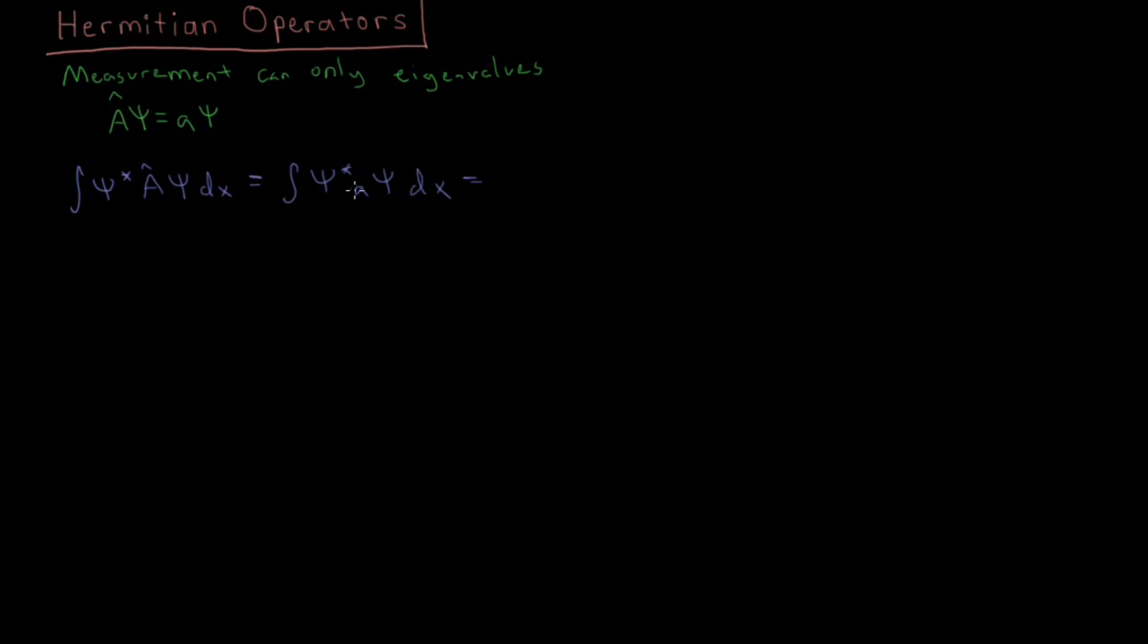And since this A is a constant now, we can pull constants out in front of integrals, because integrals are linear. And then we get psi-star-psi. And we know that the integral of psi-star-psi over the entire range of x, if psi is normalized, equals 1, because we set that to be true when finding normalization constants.